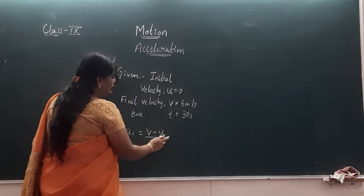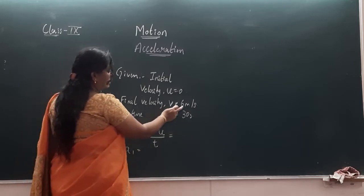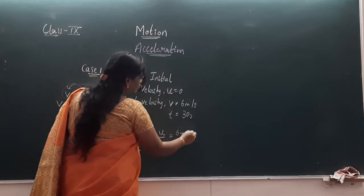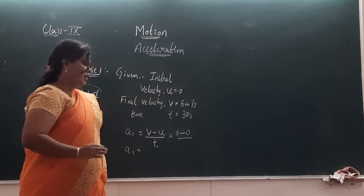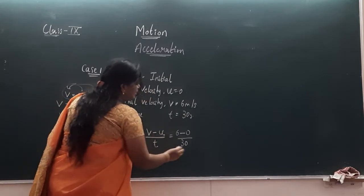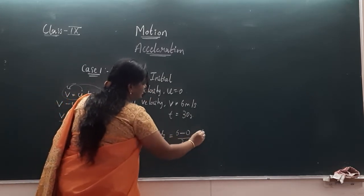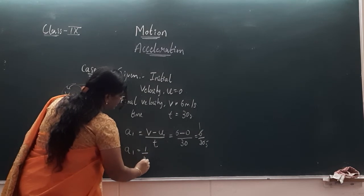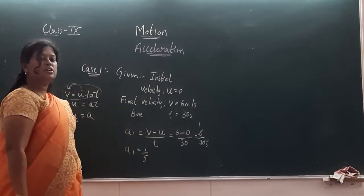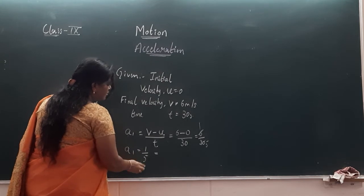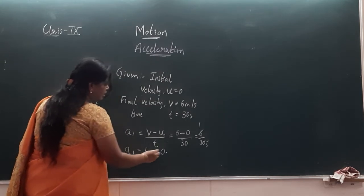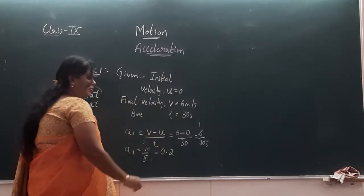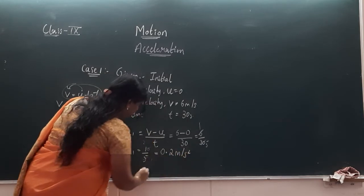So a1 is: final velocity v is 6 minus initial velocity u is 0, since he was starting from a stationary position, divided by time t is 30 seconds. So 6 minus 0 is 6, divided by 30. Simplifying: 6 divided by 30 equals 0.2 meter per second square.